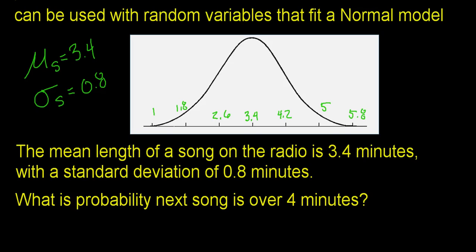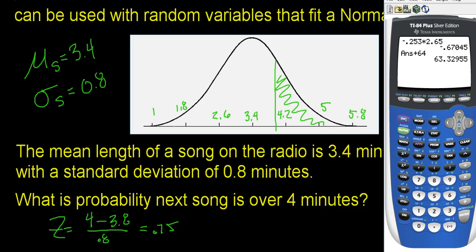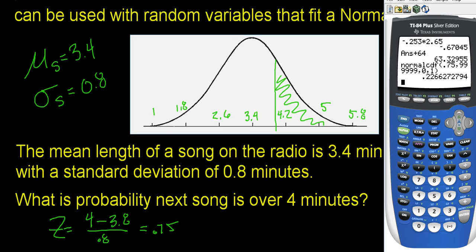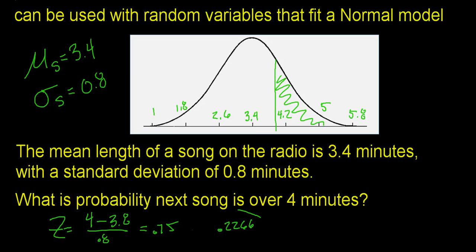What is the probability that the next song on the radio is over 4 minutes? First I find the Z-score: 4 minus 3.4 divided by 0.8 equals 0.75. Using normalCDF from 0.75 to infinity (bunch of 9s), the result is 0.2266, or 22.67%. So there's about a 22.67% probability that the next song is over 4 minutes.